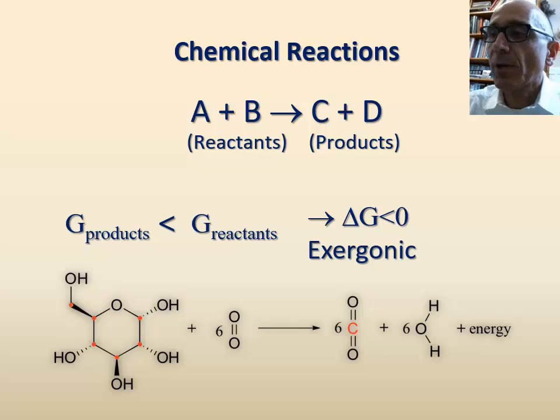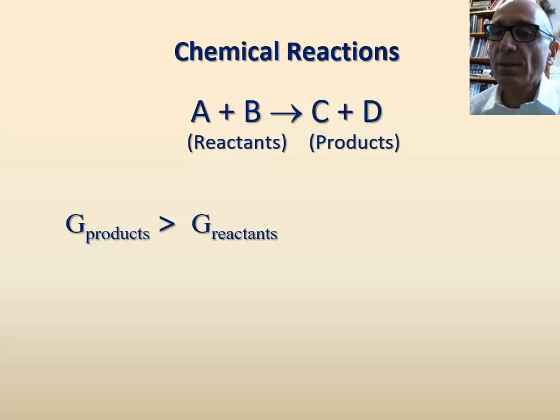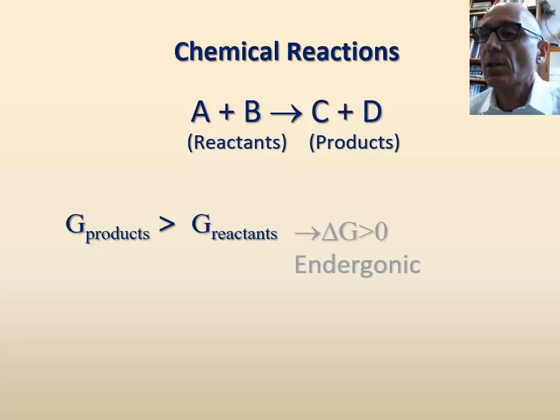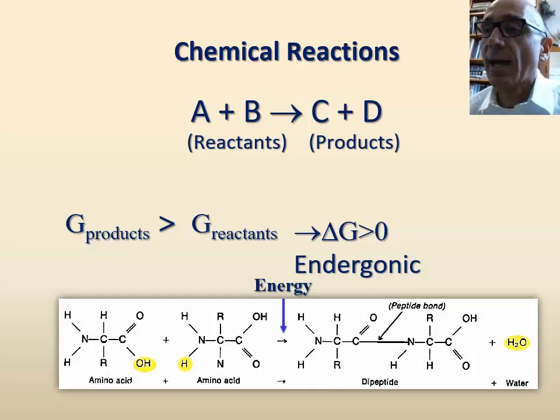By contrast, a chemical reaction in which the level of free energy in the products is higher than that of the reactants is known as endergonic reaction since there is transfer of energy from the surrounding to the system. Therefore, the difference in free energy between products and reactants in an endergonic reaction is positive. An example of endergonic reaction is the formation of peptides from amino acids through the formation of peptide bonds.